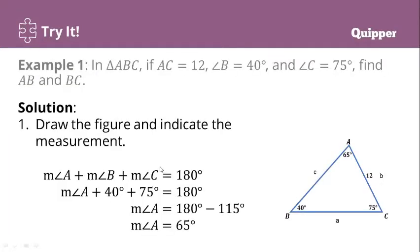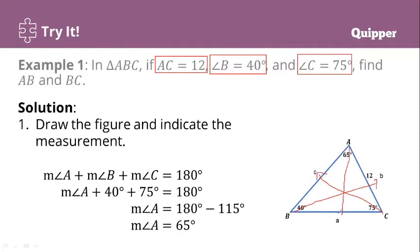Here are the solutions. Number one, draw the figure and indicate the measurement. We have the following given: AC, the side AC which is 12, angle B 40 degrees, and angle C 75 degrees. Take note that the naming of the sides, based on the definition, is opposite to the angle. So we have angle C with side c, angle B with side b, and angle A with side a.